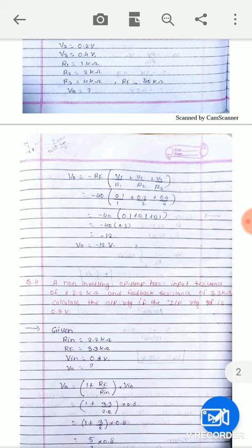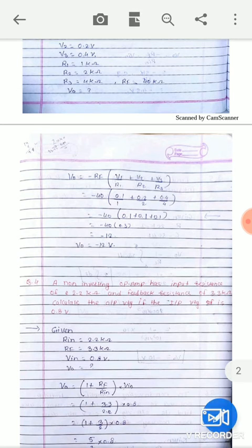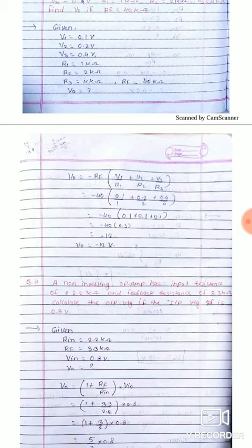Next example: non-inverting op-amp has input resistance of 2.2 kilo-ohm and feedback resistance of 3.3 kilo-ohm. Calculate the output of 0.8 volt.